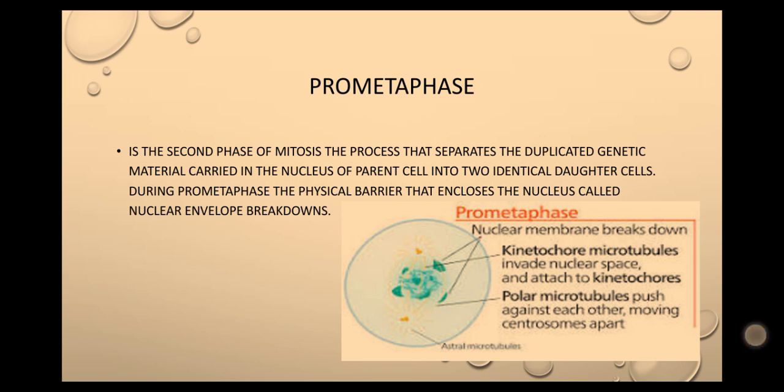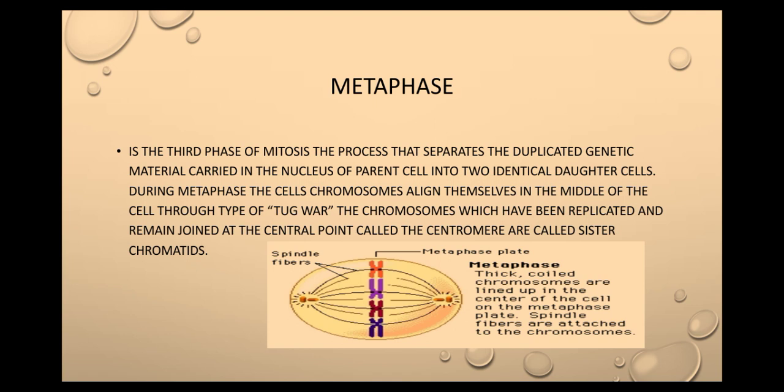The third phase of mitosis is metaphase. During metaphase, the cell chromosomes align themselves in the middle of the cell through a type of tug of war. The chromosomes, which have been replicated and remain joined at the central point called the centromere, are called sister chromatids.